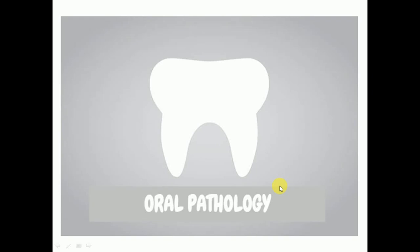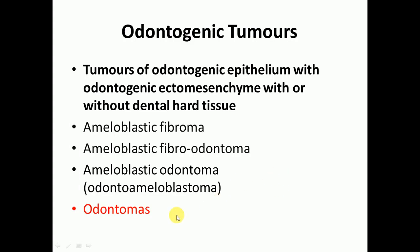Hello guys, this is Dr. Jackie and today we will discuss about odontomas. We are basically discussing odontogenic tumors which are originated from the odontogenic epithelium with odontogenic ectomesenchyme, so basically they are mixed tumors. In our previous lectures we have studied about ameloblastic fibroma, ameloblastic fibroodontoma, and ameloblastic odontoma, also known as odonto-ameloblastoma.